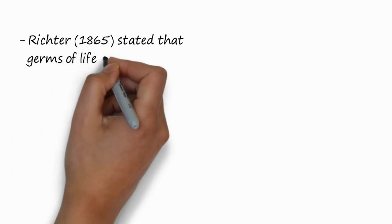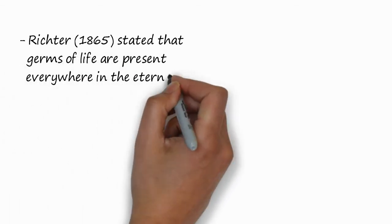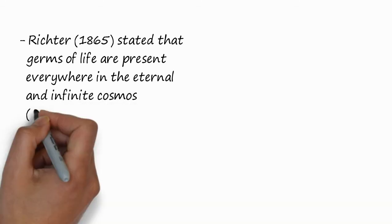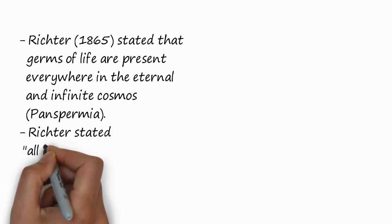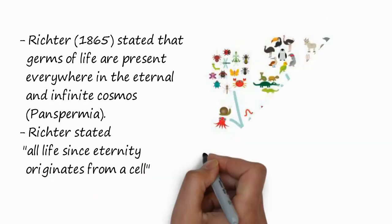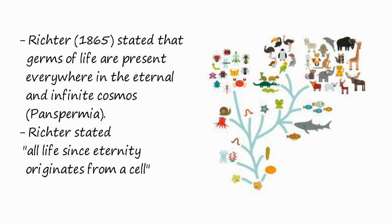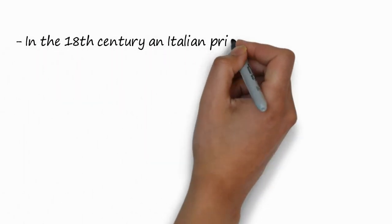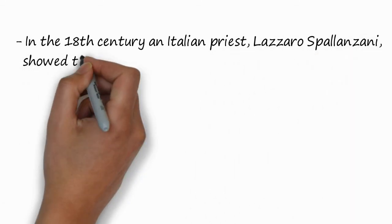However, this theory is not 100% true on the basis of several experiments and postulations. Later on, in 1865, Haeckel stated that germs of life are present everywhere in the eternal and infinite cosmos. He also stated that all life since eternity originated from a cell. You can see in this picture every type of life — animals, plants — all originated from a single cell.